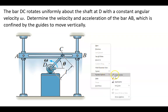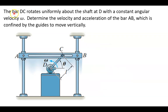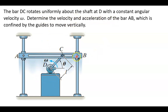So what we have here is bar DC — that's this bar here — and its length L rotates uniformly around the shaft D, so it's rotating about this motor, this drive shaft, with a constant angular velocity of omega. Determine the linear velocity and acceleration of bar AB, this bar here going up and down the tracks, confined by the guides moving vertically.